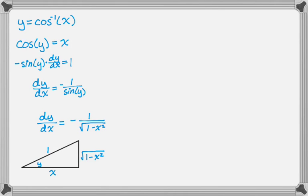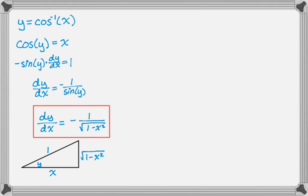You might notice that when we did the derivative of arcsine we got 1 over √(1 - x²), and the derivative of arc cosine is negative 1 over √(1 - x²). So it looks like that co-function thing — where co-functions pick up a negative sign — is happening here as well, which is going to make them a lot easier to memorize.